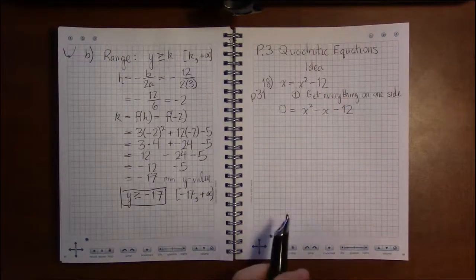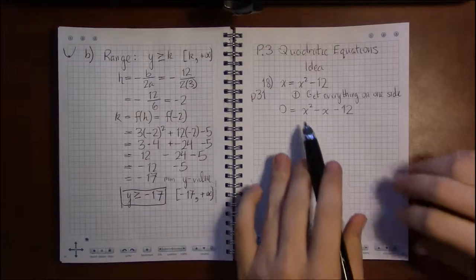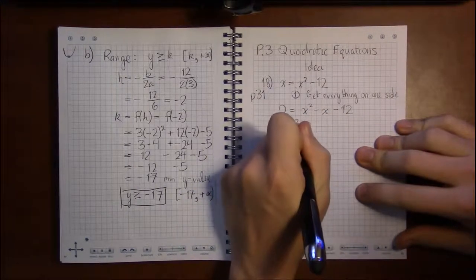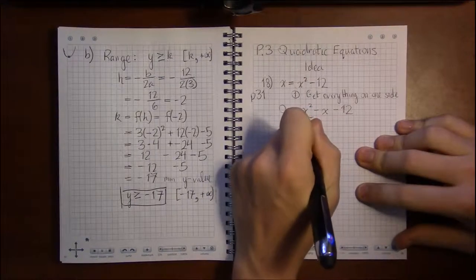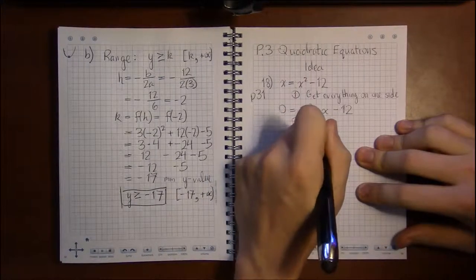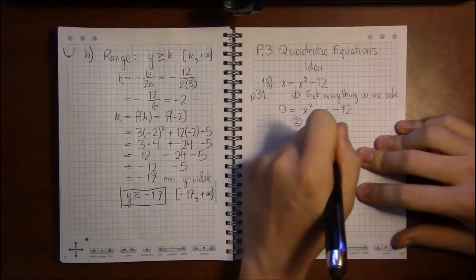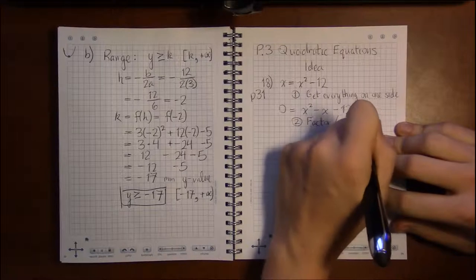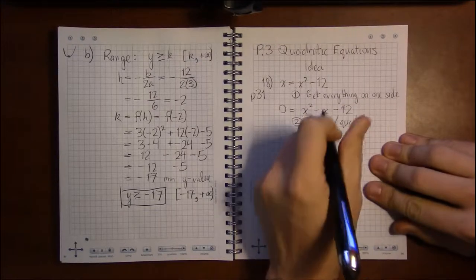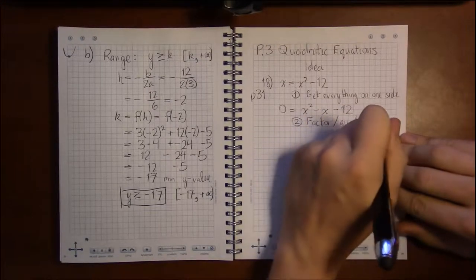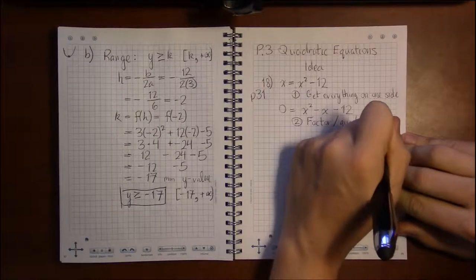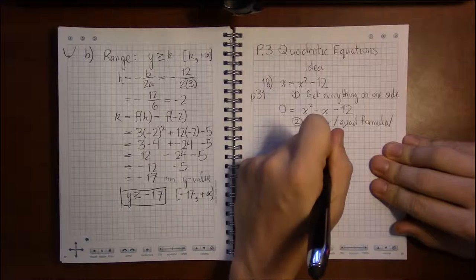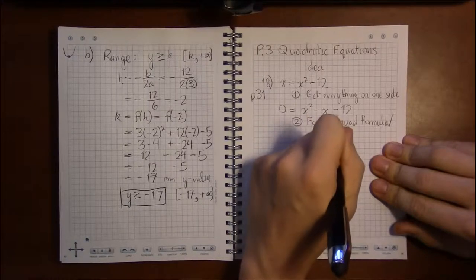Now that everything's on one side, we're going to factor, use the quadratic formula, or even complete the square—finding the h and k.